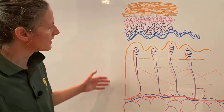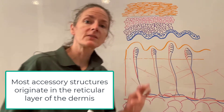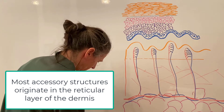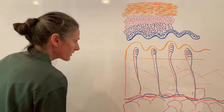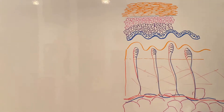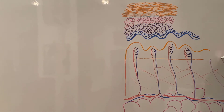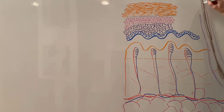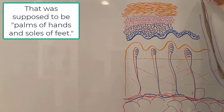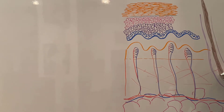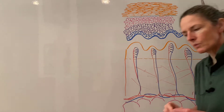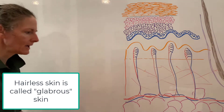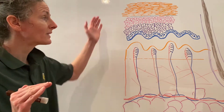Most accessory structures originate from the dermis. Hair follicles originate in the dermis and project up through the epidermis. We have hair all over our bodies with the exception of the soles of the feet and palms of the hands, as well as some areas like the external genitalia and lips. Most skin on the body is covered with hairs.